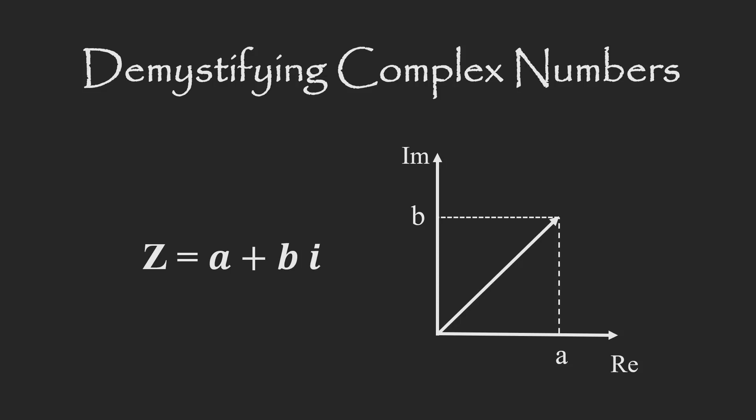Most of the confusion surrounding complex numbers comes from this guy here: the square root of negative one. It is often said that you can't take the square root of a negative number and get a real number, and this is technically true. Because of this problem, the square root of negative one is referred to as the identity of the imaginary numbers and is given the symbol i for imaginary. But we still haven't solved the problem. We have just given the problem a name.